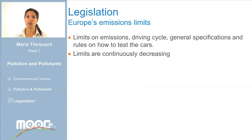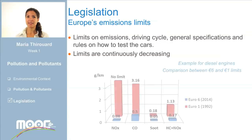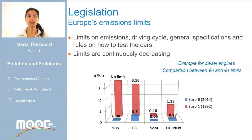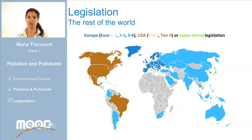The emissions legislation includes not only specific emissions limits, but also specific driving cycles and test procedures. Laws on emissions are introduced successively in stages and limits are continuously decreasing. Let's see here the European example. The first stage of the emissions legislation was called Euro 1. It was introduced in 1992. The limits at that time are shown in red. At the end of 2014, the Euro 6 stage will be effective. This is shown in blue. As you can see, legislation becomes more stringent as time goes by. In the same way, many other countries have developed legislation. There are three main legislations in the world that you can see on the map.